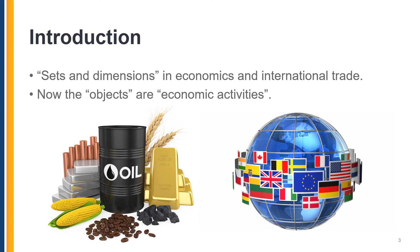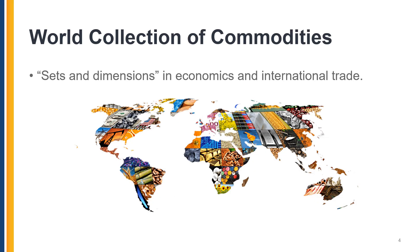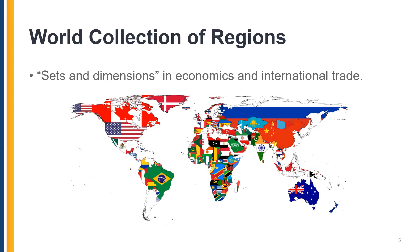Moving to sets and dimensions in economics and global trade, now these objects are economic activities. For example, the left-hand side shows a bundle of goods or commodities, and the right-hand side shows where the activities have taken place. We can say China buys corn from the United States, or likewise, Germany imports copper from Chile. In GTAP, we have a world collection of economic commodities that are produced and shipped around the world. We also have countries of origin and the destination, which are suppliers and those who consume those products.